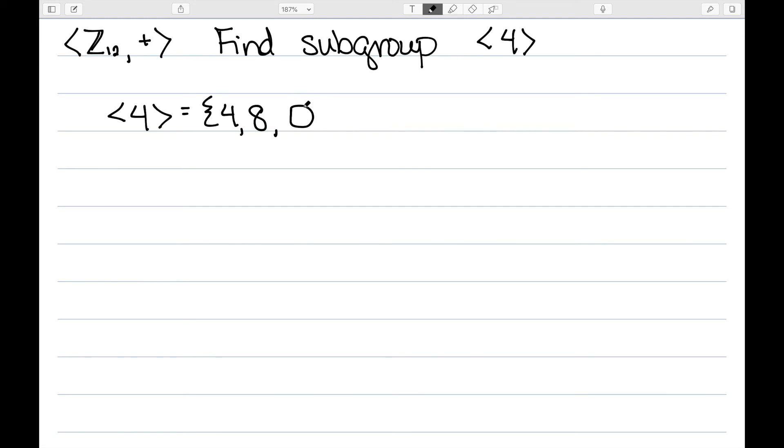4 plus 8 is 0, 8 plus 4 is 0, 8 plus 8 would be 16, divided by 12 has a remainder of 4. 8 plus 0 is 8 and then of course 0 plus 4 and 0 plus 8 are also already in this set. So that would be the entire subgroup.